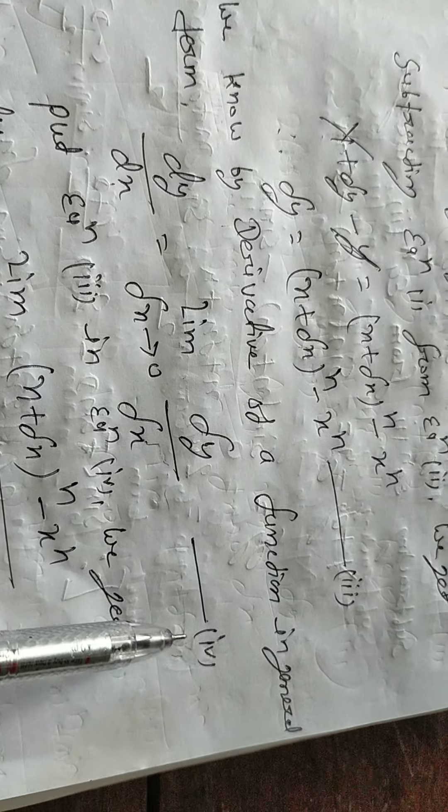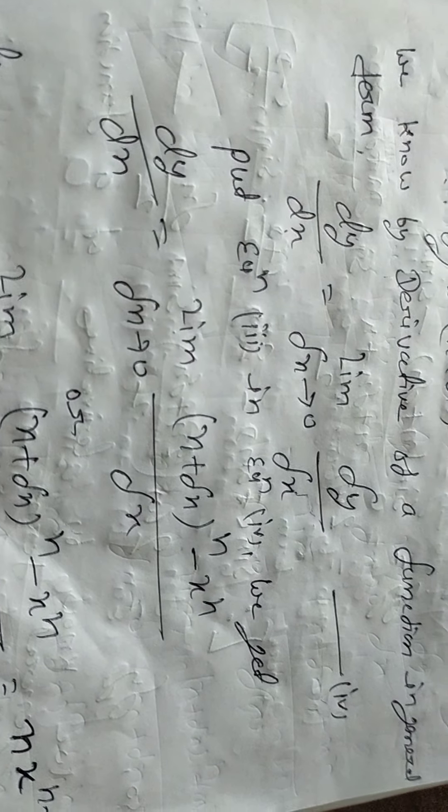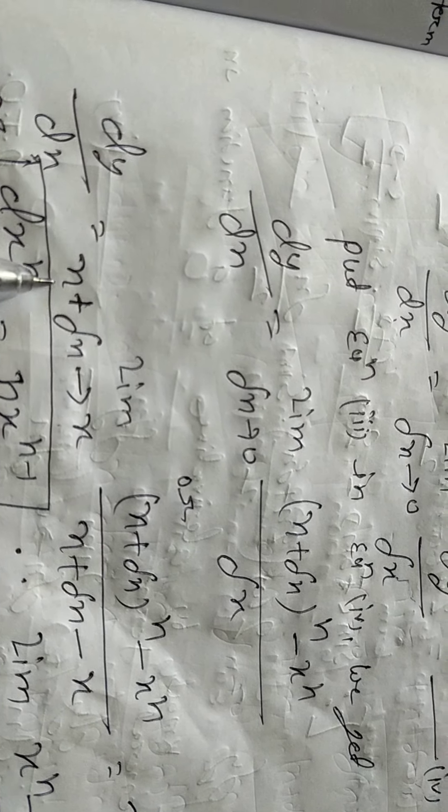Derivative in general form, dy/dx equals limit as dx tends to zero of dy/dx. This statement we have defined in 11th class. This is equation number 4. Now what we do is take the value of dy from equation 3 and put it in equation 4. We get dy/dx equals limit as dx tends to zero of (x plus dx) to the whole power n minus x to power n, divided by dx.